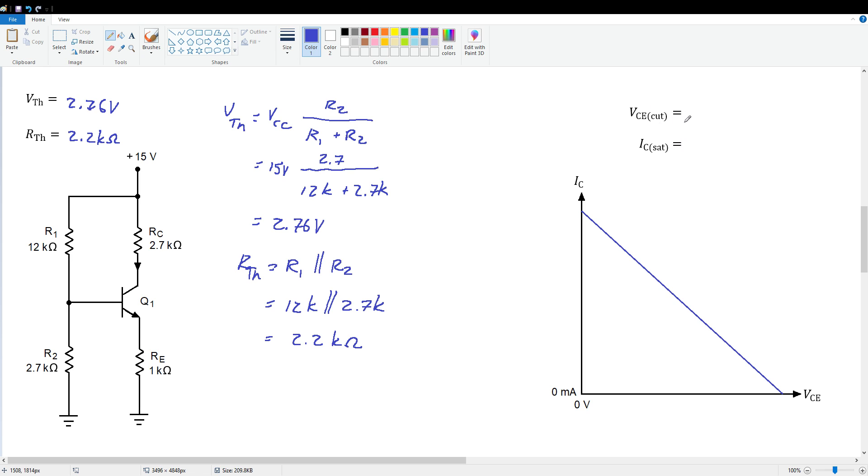Let's go ahead and calculate the cutoff and saturation current. VCE cutoff is simply 15 volts. IC saturation is 15 divided by RC plus RE. So 15 divided by 3,700 gives us 4.05 milliamps. These values won't change no matter what beta does. So we don't need to worry about those anymore.